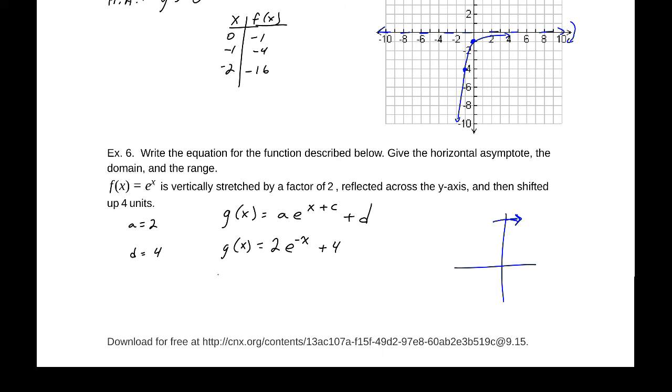Now for our domain, negative infinity to infinity. Our range, since we are reflecting across the y-axis, our range does not change. And our horizontal asymptote is y = 4 because we are shifting up four.